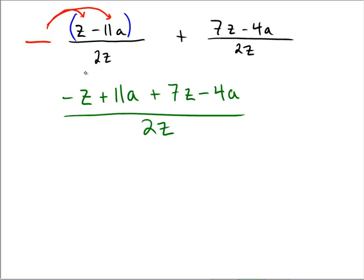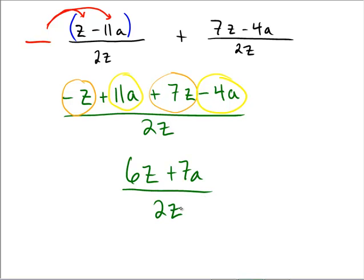Now, negative z plus 7z gives us 6z. On the other hand, 11a minus 4a leaves us with plus 7a. After we put all this over the old denominator of 2z, we are done with the problem.